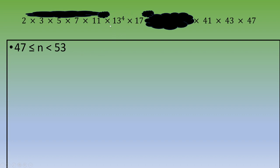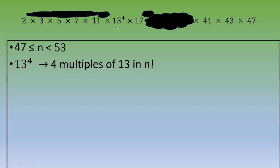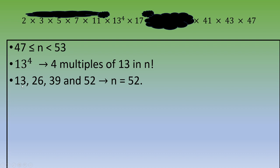Now we focus on the term 13 to the power 4. This indicates that there are four multiples of 13 in n factorial. Let's list them: 13 × 1 = 13, 13 × 2 = 26, 13 × 3 = 39, and 13 × 4 = 52. So we can deduce that n equals 52.